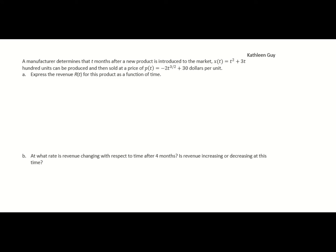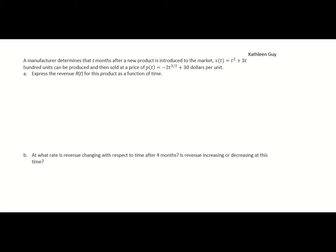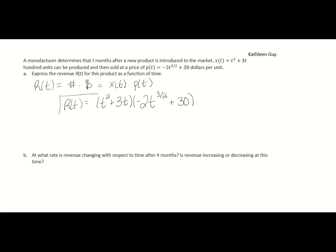Let's finish with a business application. A manufacturer determines that t months after a new product is introduced, x of t equals t squared plus 3t (hundreds of units) can be produced and sold at a price p of t dollars per unit. Express the revenue as a function of time. Revenue r of t equals units times price: x(t) times p(t), which gives (t squared plus 3t) times (negative 2t to the 3 halves plus 30). That is the revenue function as a function of time.